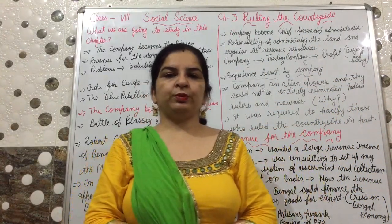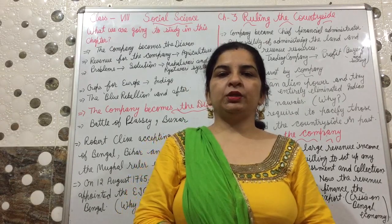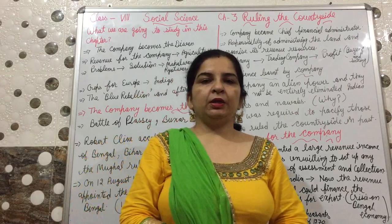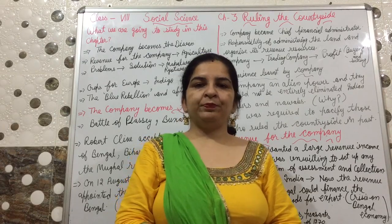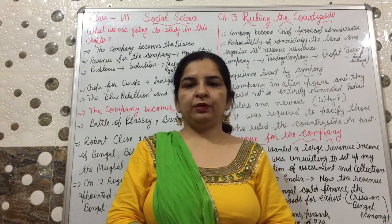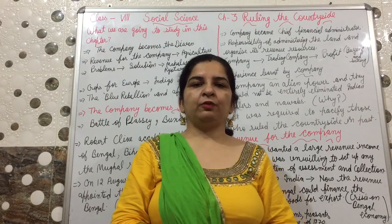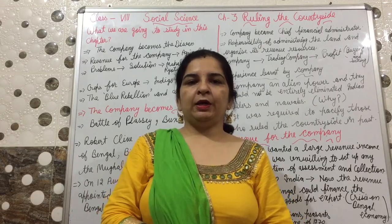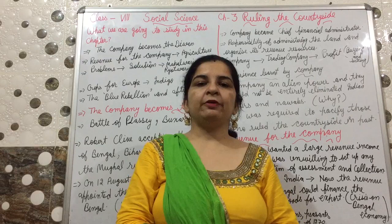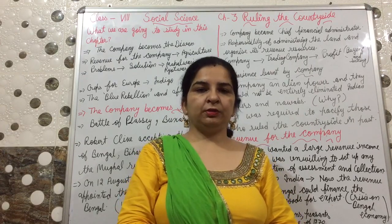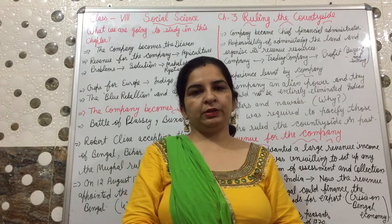Good morning students. Before starting today's topic, let's recall what we discussed in the second chapter of history. We discussed about the East India Company. They got the charter from Queen Elizabeth in 1600 and due to that they got the sole right of trade from India. In 1651 they established the English factory on the bank of river Hooghly. They got the firman and due to that they got duty-free rights. After that, Battle of Plassey and Battle of Buxar we also read. After the Battle of Buxar, the British won and they got the Diwani right.